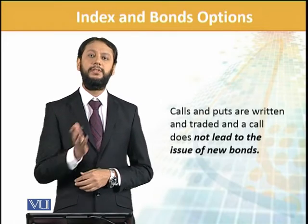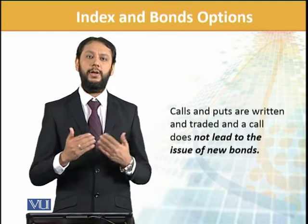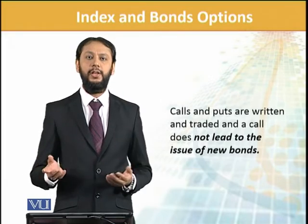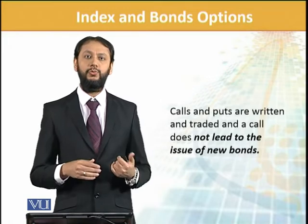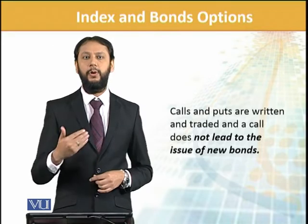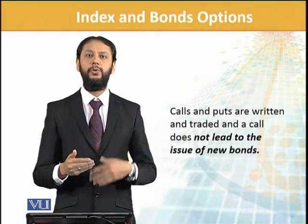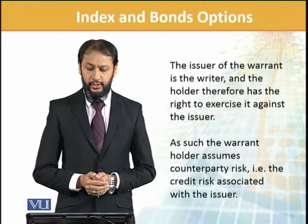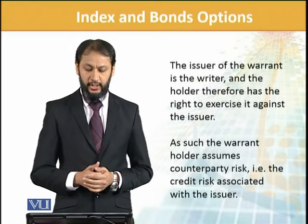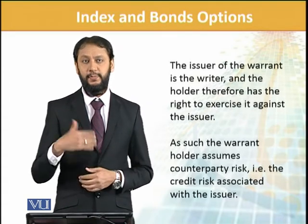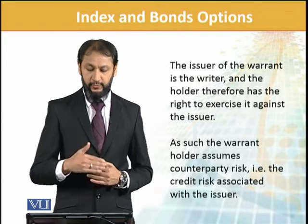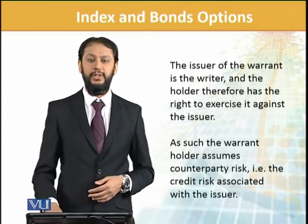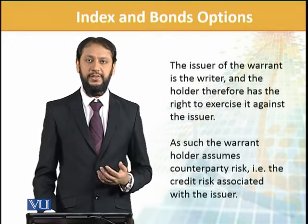Calls and puts on traded bonds do not lead to new issuance of bonds — settlement is based on existing already-issued bonds. No new bond is issued by the company. By contrast, when a new bond is issued upon exercise, that distinguishes it. The issuer of the warrant is the writer, and the holder has the right to exercise. As such, the warrant holder assumes counterparty risk, because you are dealing with the issuer — if they default or their financial condition deteriorates, you will be on the losing side. So default risk or counterparty risk stands here.